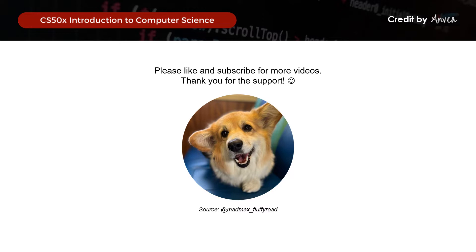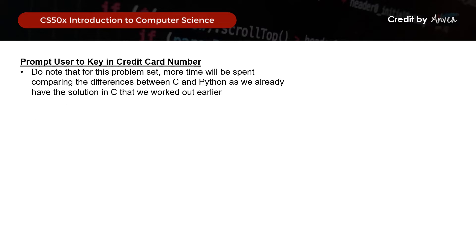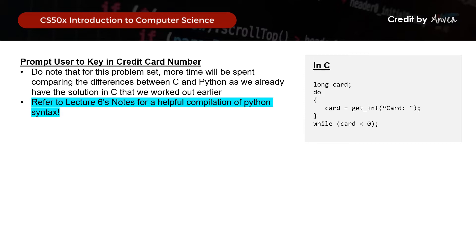So moving on, let's work on the first step. For this walkthrough, we will be spending more time comparing the differences between C and Python syntax, as we already covered the logic of the solution in our Week 1 video. If you have not watched it yet, please refer to the link in the description below. One tip that really helped me prepare for this solution is to refer to the Lecture 6 Notes for a helpful compilation of Python syntax — you should definitely check it out too.